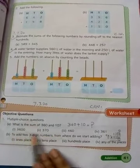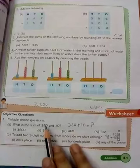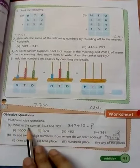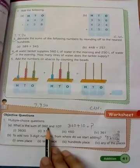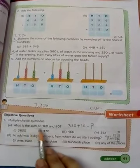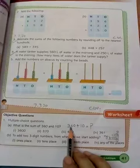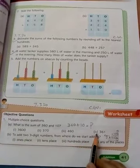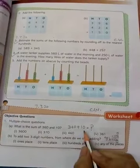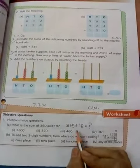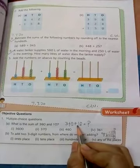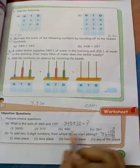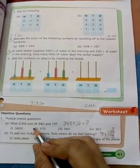Objective type questions, that means 4 options are there for each question. Multiple choice questions, part A: What is the sum of 360 and 10? Sum means addition. So the question is asking 360 plus 10. 0 plus 0, 6 plus 1 is 7, and 3. So 360 plus 10 is 370. This is the correct answer.